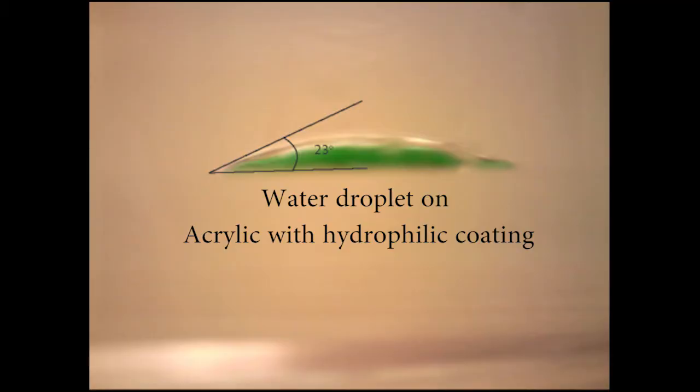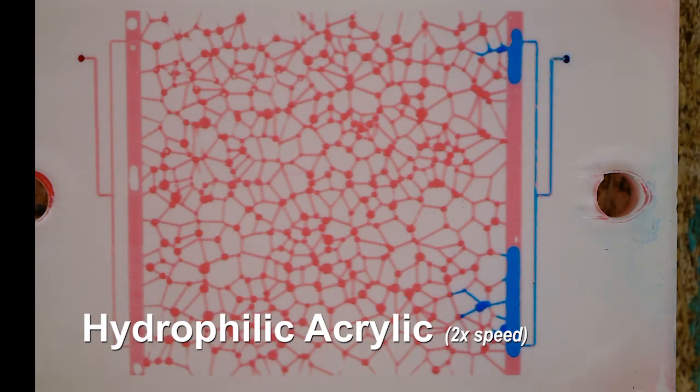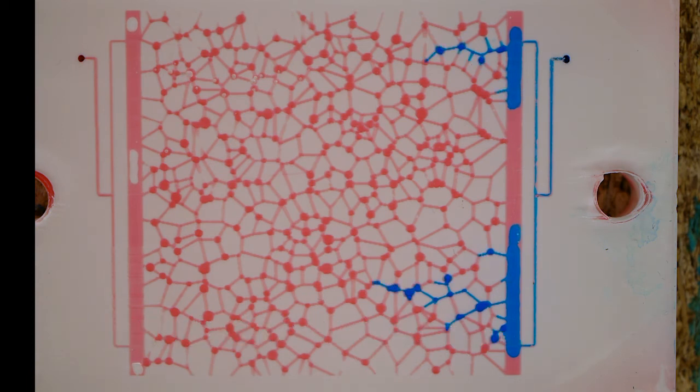The second chip that I will show you has been coated to be hydrophilic with a contact angle of just 23 degrees. This coating allows water to prefer to be in contact with the rock. Oil is pushed more easily from the rock and water easily flows into each pore with minimal snap-off.